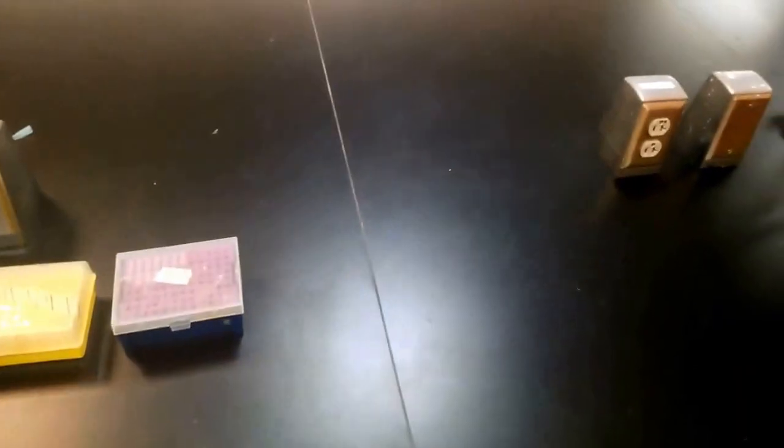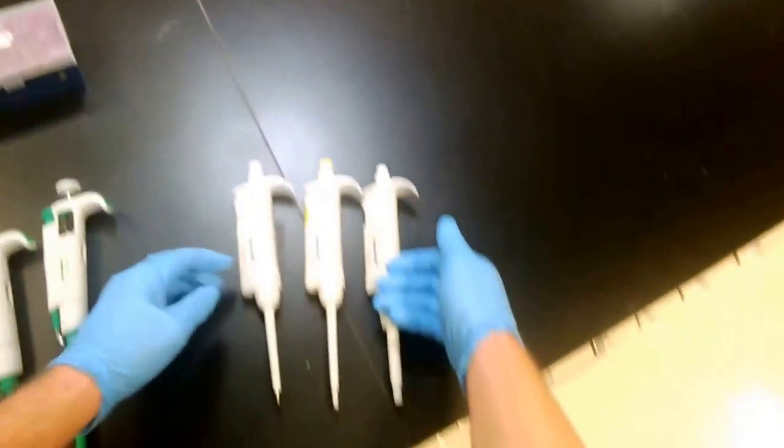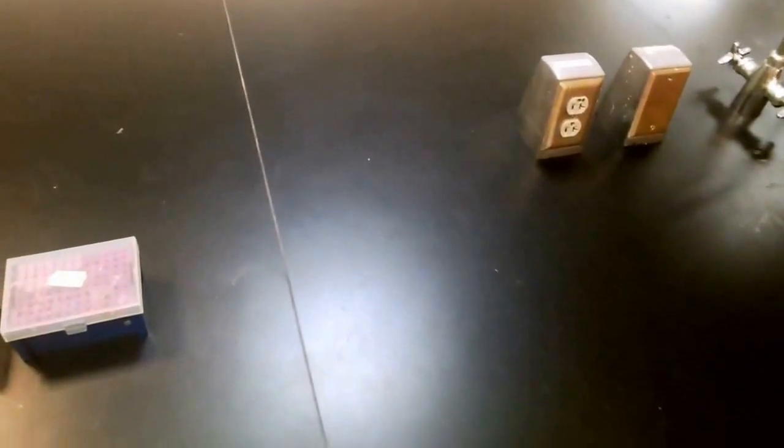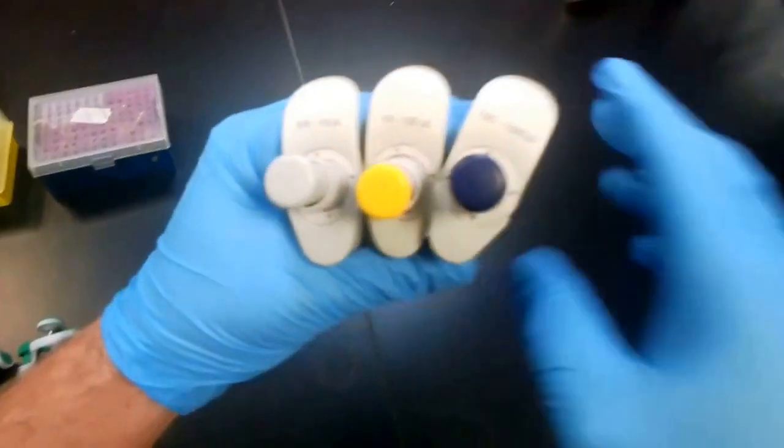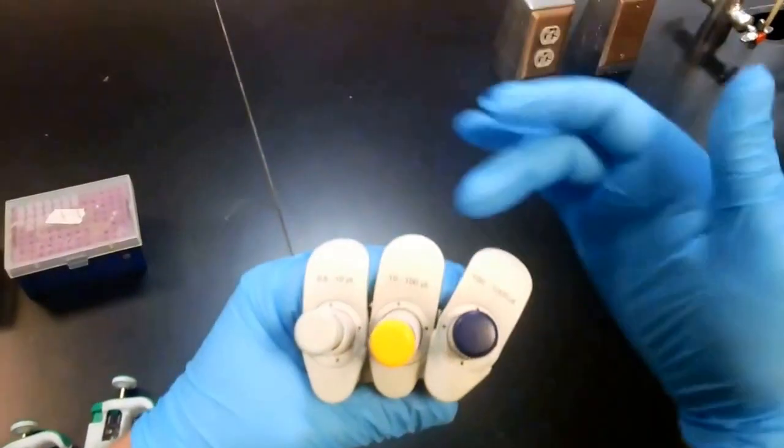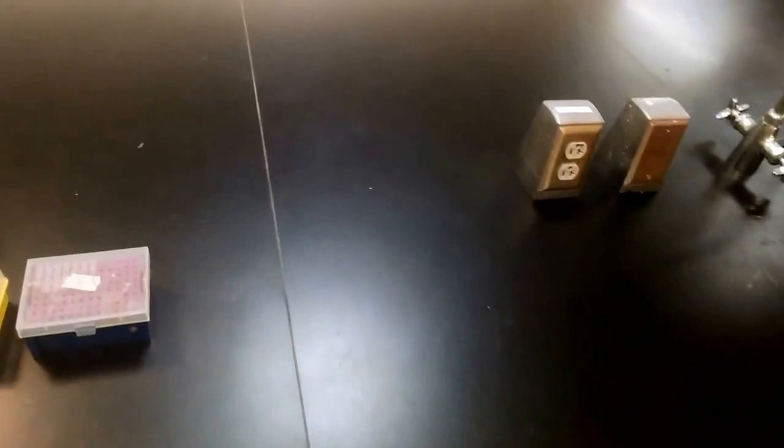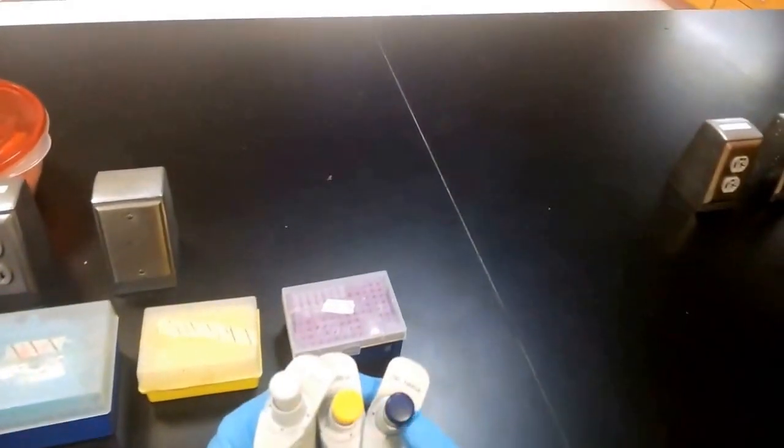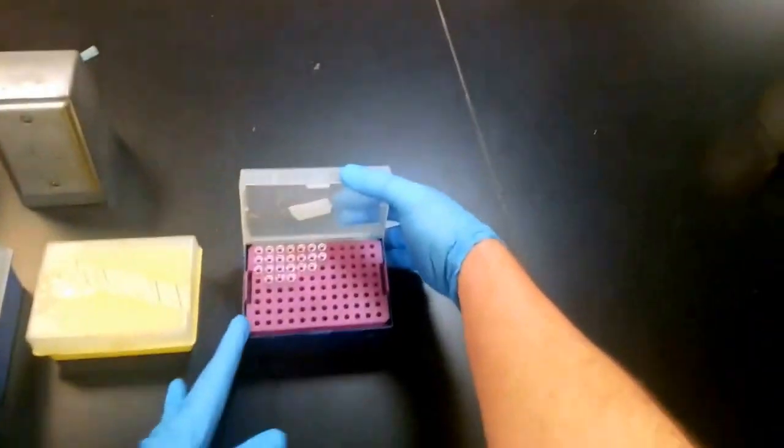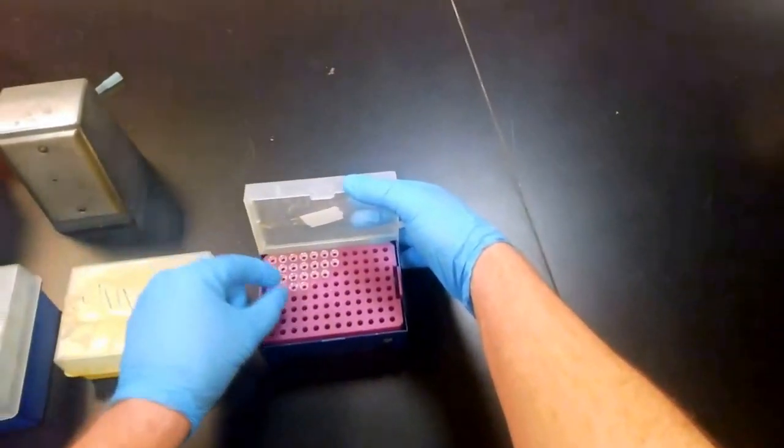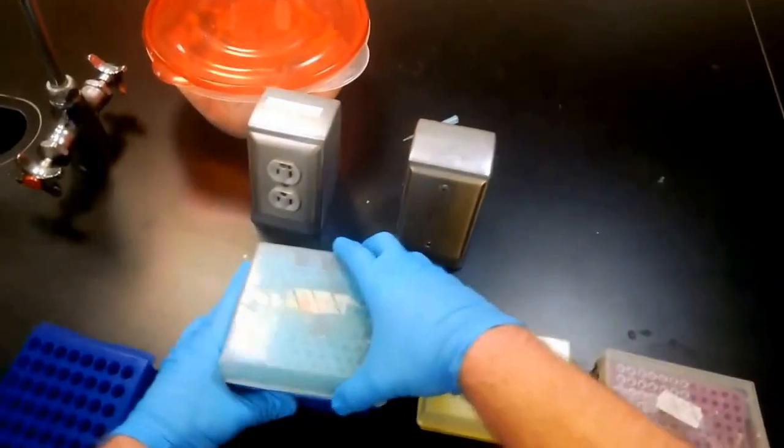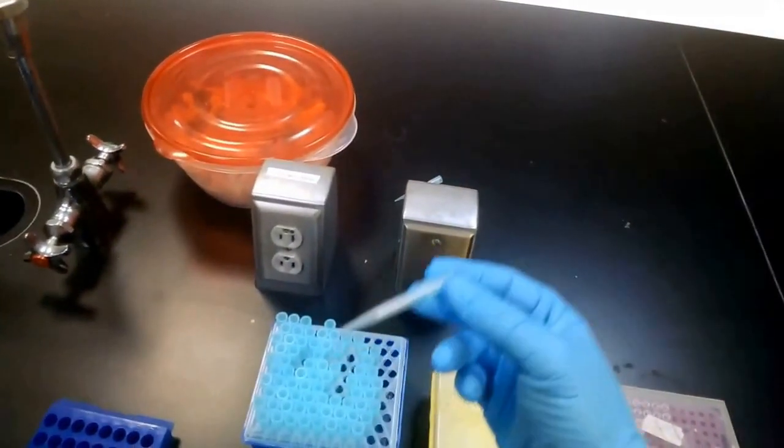On the Eppendorf side they're labeled 100 to 1000 microliters, and if we look at the scale here on the top, we've got 100 to 1000, 10 to 100, and 0.5 to 10. The colors on the analog scale here and on the buttons correspond to the colors of our tips. For 0.5 to 10 we have white tips, for 10 to 100 yellow tips, and from 100 to 1000 blue tips.